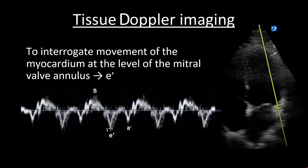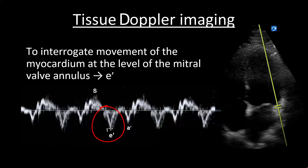We also use tissue Doppler imaging, a type of spectral Doppler, to interrogate the movement of the myocardium at the level of the mitral valve. Diastolic dysfunction results from impaired LV relaxation, and myocardial movement is therefore impaired in patients with diastolic dysfunction — quantifiable using tissue Doppler imaging at the mitral valve annulus. The S-wave is a positive deflection above the baseline as the myocardium contracts and moves towards the apex and your probe in systole. Right after the S-wave is the E-prime, representing movement of the myocardium away from the probe as it relaxes in early diastole. The A-prime represents further relaxation in late diastole with the atrial kick.